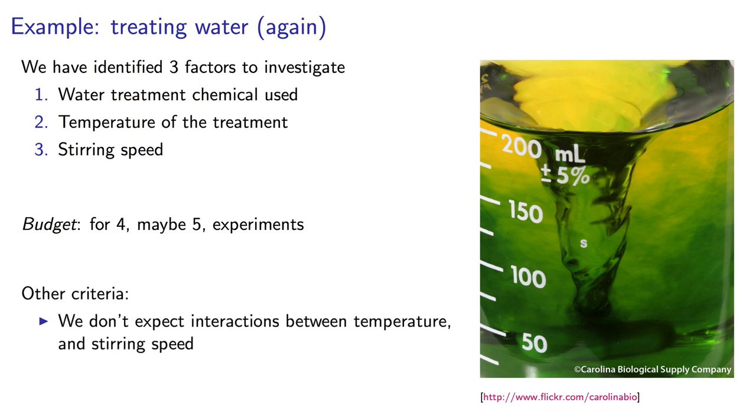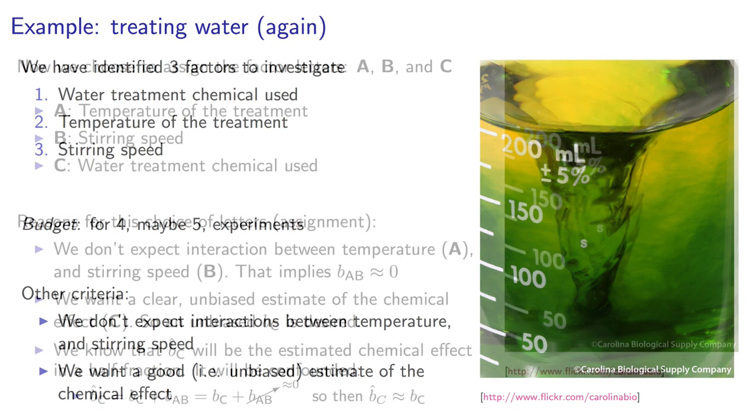My prior experience with the system might lead me to believe there will be no significant interaction between temperature and stirring speed. I would like to get a good estimate of the chemical factor added. Remember the premise that chemical Q was twice the cost of chemical P? In that case, I don't want the effects of the chemical to be confounded with other effects in the system.